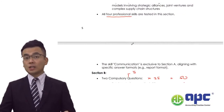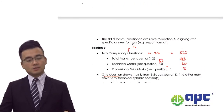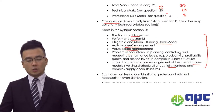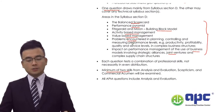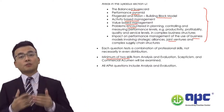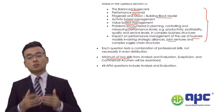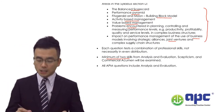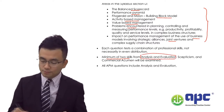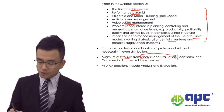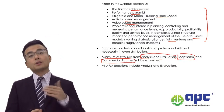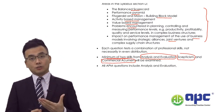The communication skill will only be tested in question 1 — it will never be tested in Section B questions. The professional skills marks are quite subjective. They can be analysis evaluation, scepticism, commercial acumen, and communication skills.